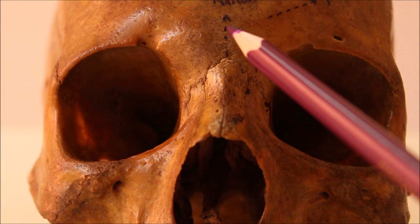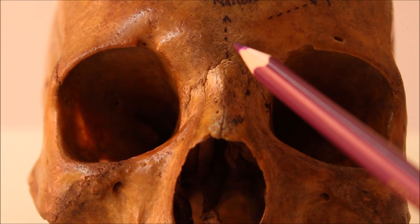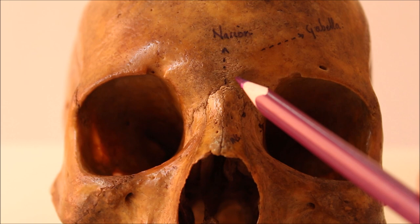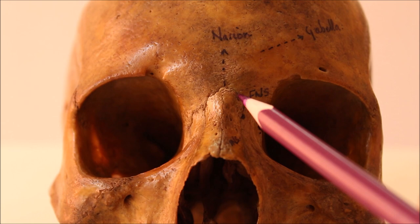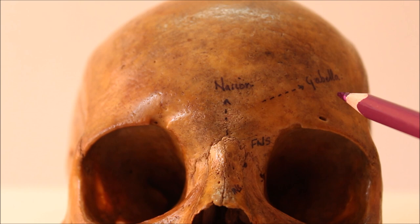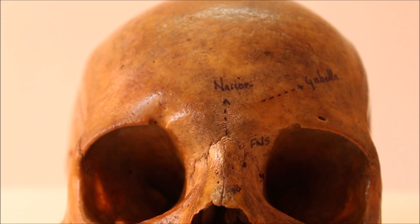Below the glabella the skull recedes to the frontonasal suture at the root of the nose. The nasion is a median point at the root of the nose where the internasal suture meets the frontonasal suture. The frontal tuber or eminence is a low rounded elevation above the supraciliary arch, one on each side. It is most prominent in females and children.